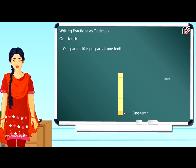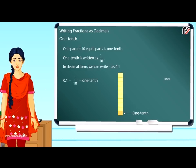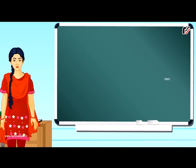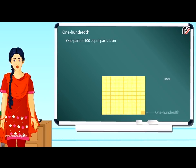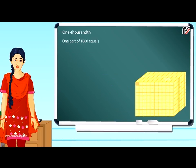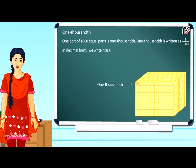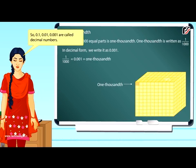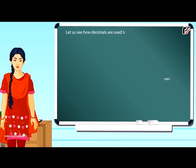Writing fractions as decimals. One-tenth: 1 part of 10 equal parts is 1 tenth, written as 1/10. In decimal form, we write it as 0.1. One-hundredth: 1 part of 100 equal parts is 1 hundredth, written as 1/100. In decimal form, we write it as 0.01. One-thousandth: 1 part of 1000 equal parts is 1 thousandth, written as 1/1000. In decimal form, we write it as 0.001. So 0.1, 0.01, and 0.001 are called decimal numbers.